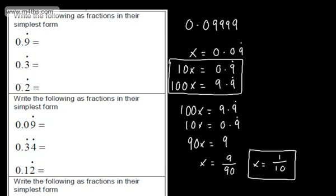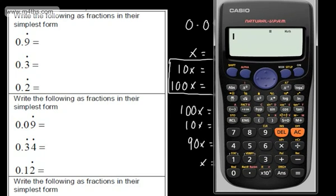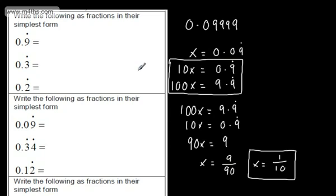So let's look in a calculator. On these newer calculators, you've got a function to do this. So if we write in 0.0, hit shift and then this button here, that gives me now the recurring part, and we get 1 tenth. You'll be expected to do this non-calculator — it's a bit pointless doing it with a calculator. But hopefully, if you've got a calculator at hand, you can check your results.